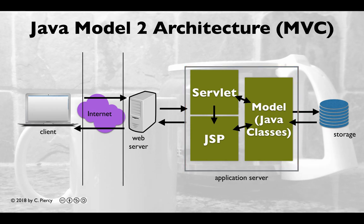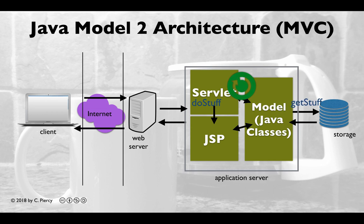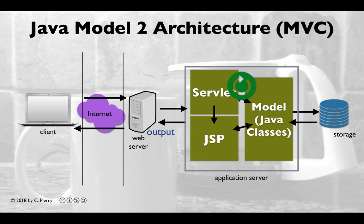As with the other architectures, a request can be made by the client to the web server. The web server will then ask the servlet or controller to do stuff. The servlet may access Java classes from the model, which in turn may access storage to get stuff. Once processing is complete, the results will be passed to the JSP to prepare the output. Output will be passed back to the web server, and then the web server, as in other models, will create the response to send back to the client.